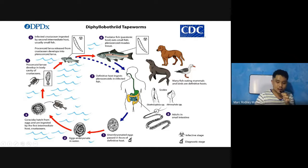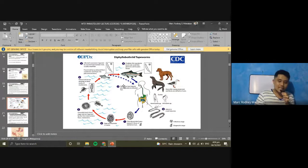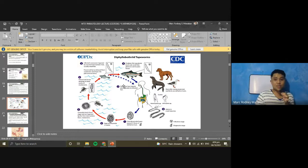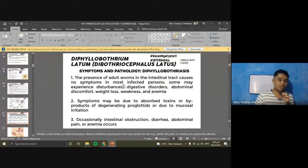Additionally, in pernicious anemia, since parietal cells produce both intrinsic factor and hydrochloric acid, their destruction also leads to achlorhydria — absence of gastric acid. This differentiates pernicious anemia from D. latum anemia: examining gastric juice for free hydrochloric acid can help distinguish them. In pernicious anemia, no HCl is found; in D. latum infection, HCl is present. Only about 2% of D. latum patients progress to severe anemia, particularly those in Baltic and Finnish regions who are genetically predisposed.